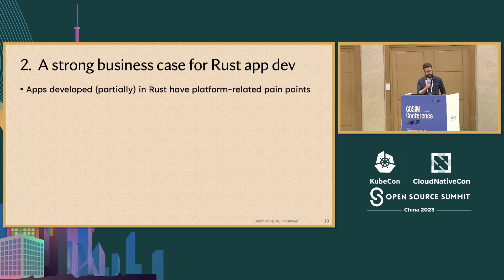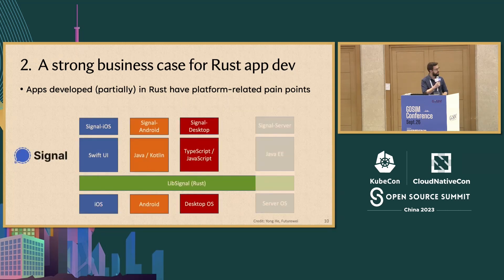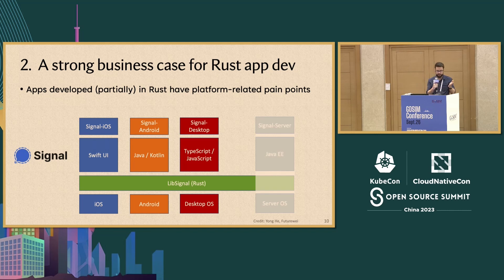The second motivating point is that we'd like to make a strong business case for developing applications in Rust. We can look at applications that have already used Rust to some extent to see their pain points. Let's talk about Signal — a fairly well-known end-to-end encrypted messaging app. Signal is currently implemented across separate repositories, but the business logic of communicating with the Signal Messaging Service backend is written in Rust.